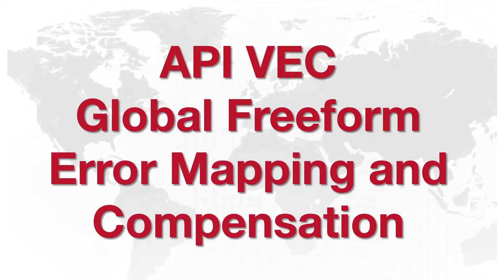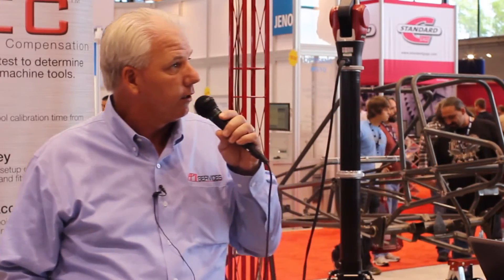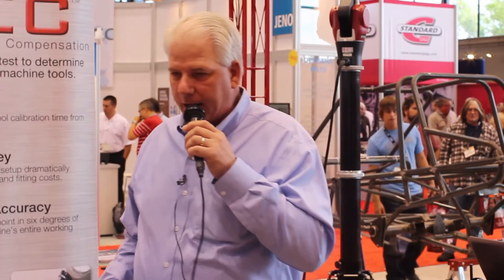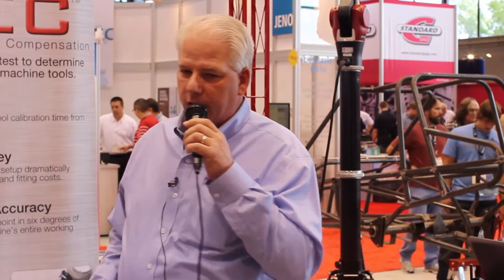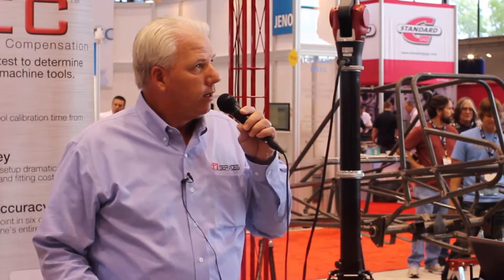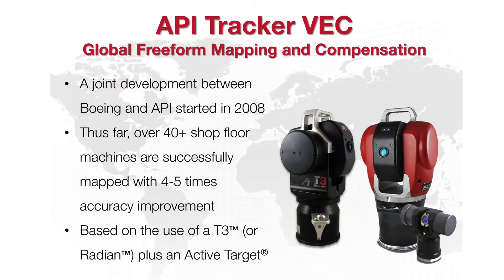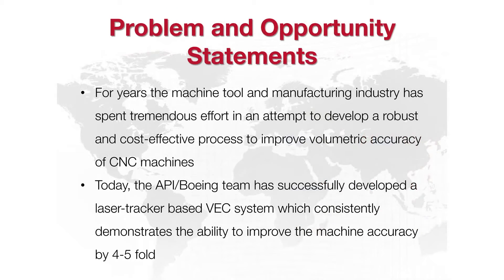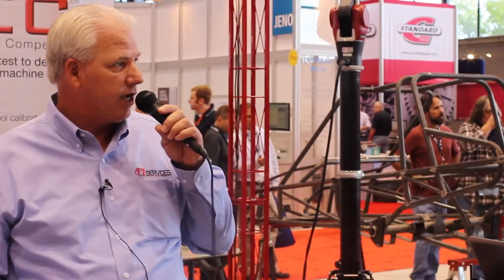The API VEC Global Freeform Error Mapping and Compensation is our latest volumetric package. Freeform means asymmetrical — we collect data on a point cloud, very randomly throughout the volume, utilizing all five axes. VEC was developed as a joint process between Boeing and API back in 2008, and we've done 40-plus machines with calibration improvements of four to five times.